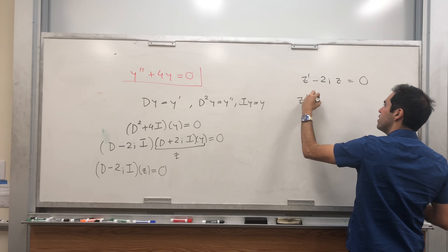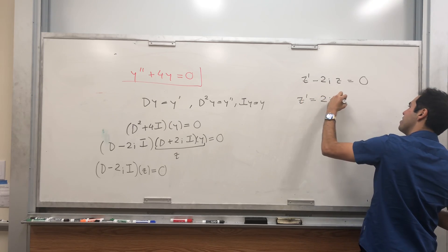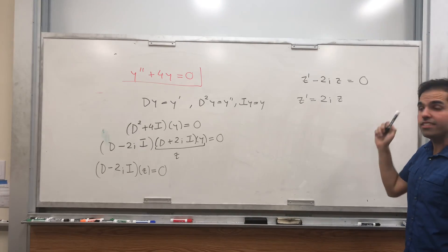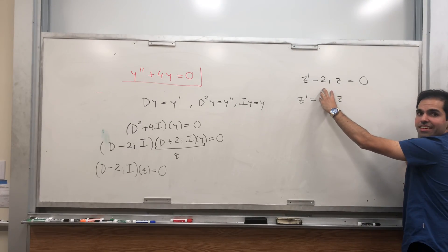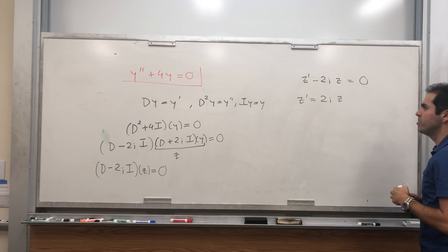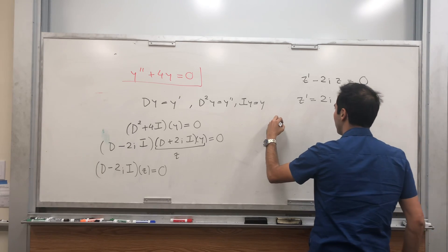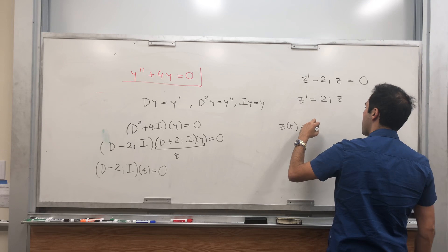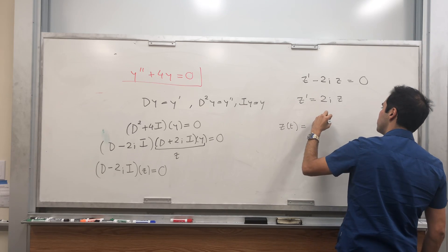And then that becomes a differential equation, z prime equals 2iz, and this we can solve. You see, this is a constant, so we can still solve it using our usual techniques. So z of t becomes Ae to the 2it.